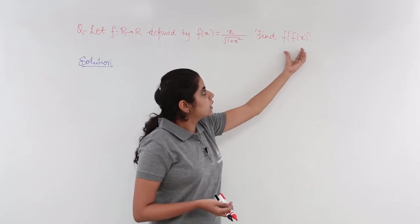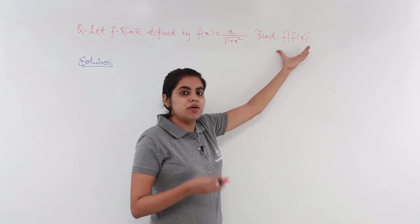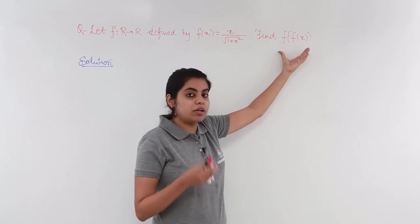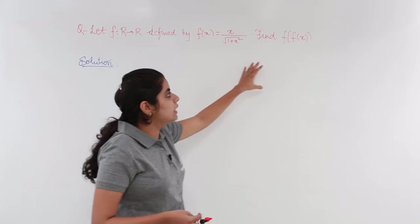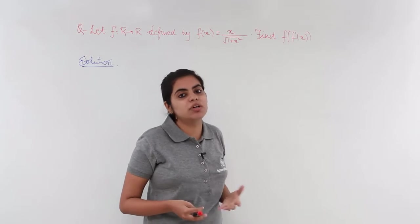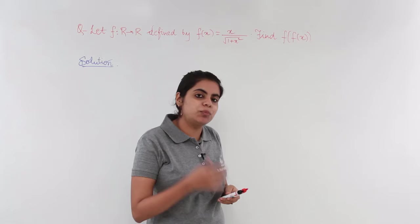Do you understand this? Earlier, we had f of g of x or g of f of x. Here, we do not have two functions. We have only one function fx, and we have nesting among these functions only. Let's see what the problem has to say.